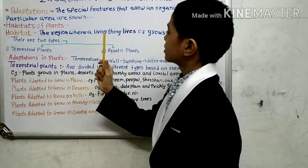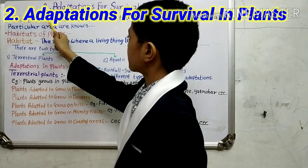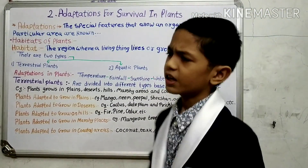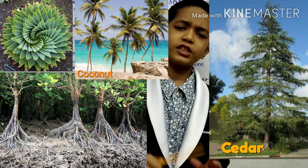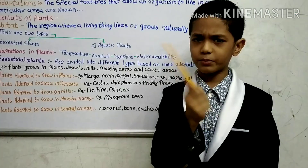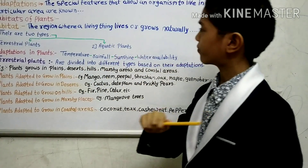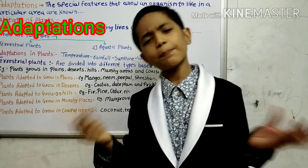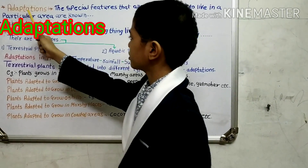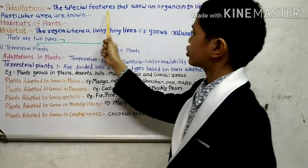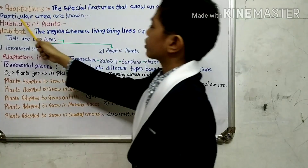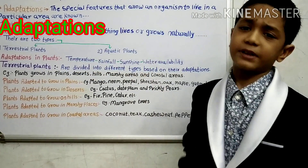Our chapter for today is Lesson Number 2: Adaptation for Survival in Plants. In the previous chapter we studied different types of plants and trees, but why are they different from each other? They are different because they have adapted themselves differently. Adaptation means the special features that allow an organism to live in a particular area.